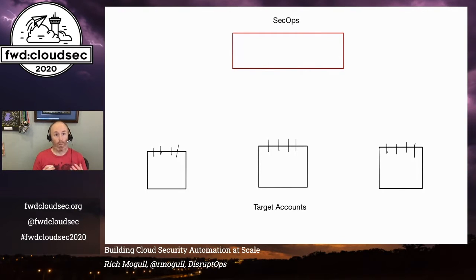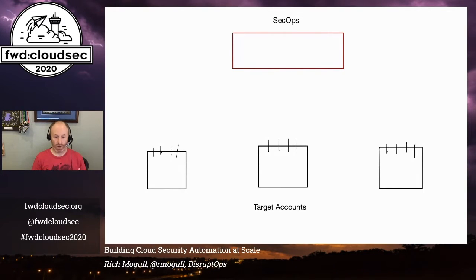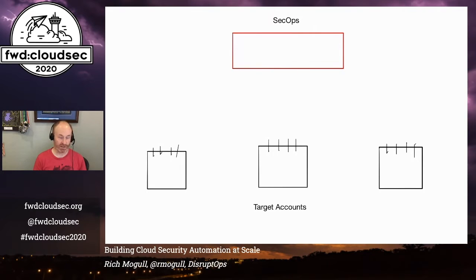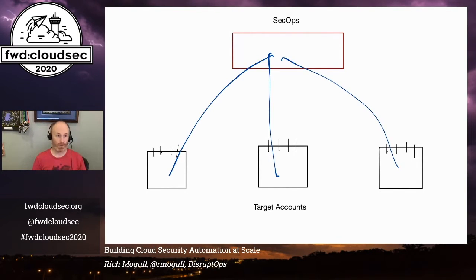Here's the core problem. Almost all organizations who want to do automation start with some basic Lambda functions, or maybe you run something on your desktop or in a container. Maybe it's something you wrote yourself, maybe it's an open source tool, maybe you're using Cloud Mapper or Prowler or a bunch of the other tools available to us these days. But when it comes down to it, the real challenge isn't running automation — it's how do you actually go ahead and scale that up? Almost everybody has some kind of a SecOps account, security operations account, incident response account.